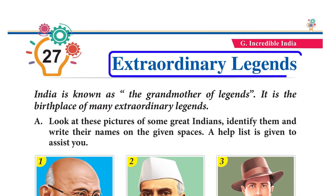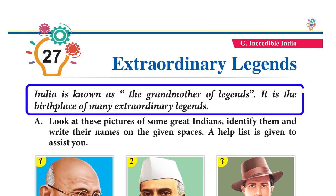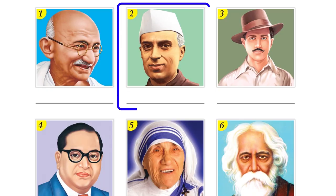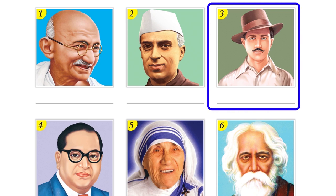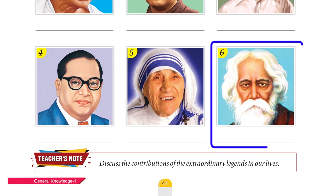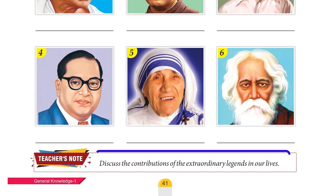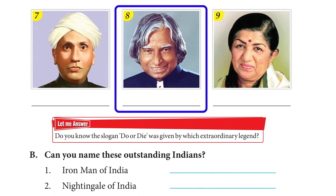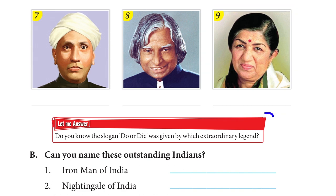Chapter 27: Extraordinary Legends. India is known as the Grandmother of Legends — it is the birthplace of many extraordinary legends. Look at pictures of some great Indians and identify them: Mahatma Gandhi, Jawaharlal Nehru, Bhagat Singh, Dr. B. R. Ambedkar, Mother Teresa, Dr. Rabindranath Tagore, C. V. Raman, Dr. A. P. J. Abdul Kalam, Lata Mangeshkar.